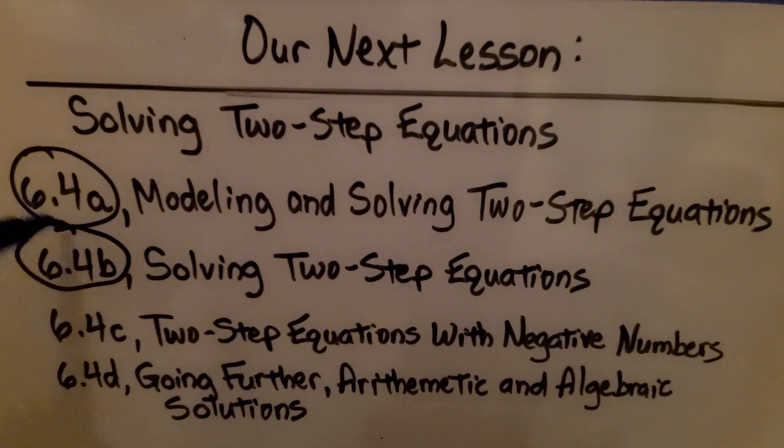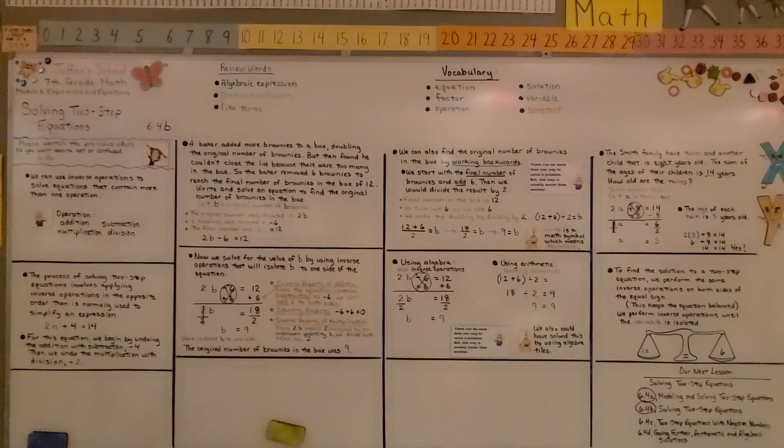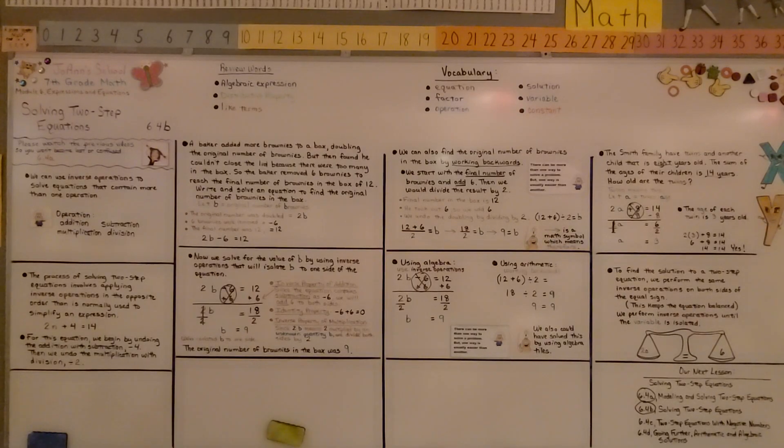So we've finished the second part of the lesson. We're going to move on to the third part, and we're going to talk about two-step equations with negative numbers. To find the value of the variable, just keep doing the inverse operations to both sides of the equal sign until that variable is isolated. Have a wonderful day, and please join me for the third part of the lesson. Bye!